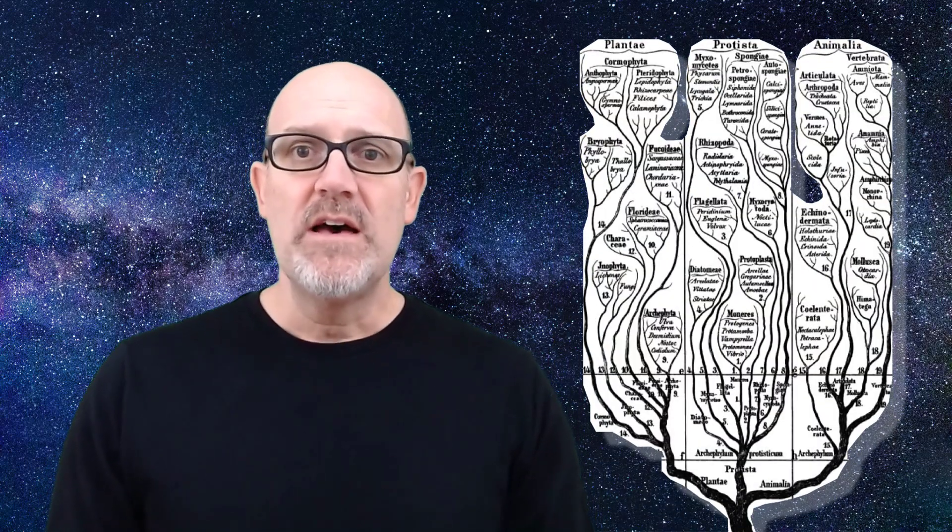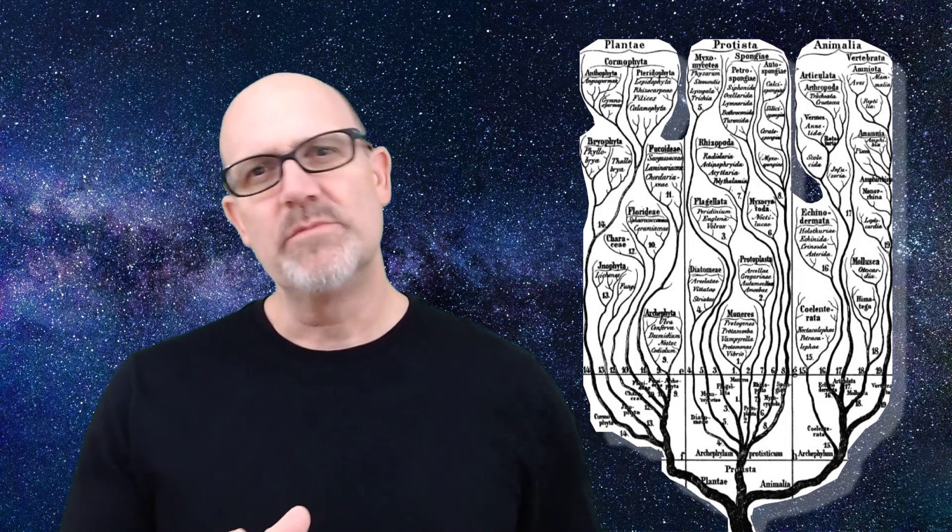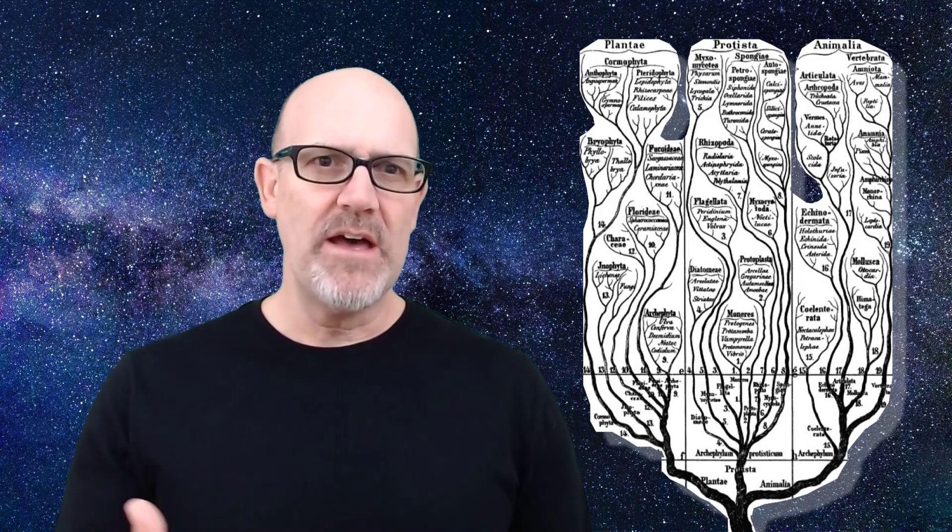According to Darwin, all organisms descended from some common ancestor, so scientists should be able to link all organisms with their evolutionary counterparts. Importantly, Darwin believed that natural selection worked on already existing biological parts, modifying them, hence the idea of descent with modification.